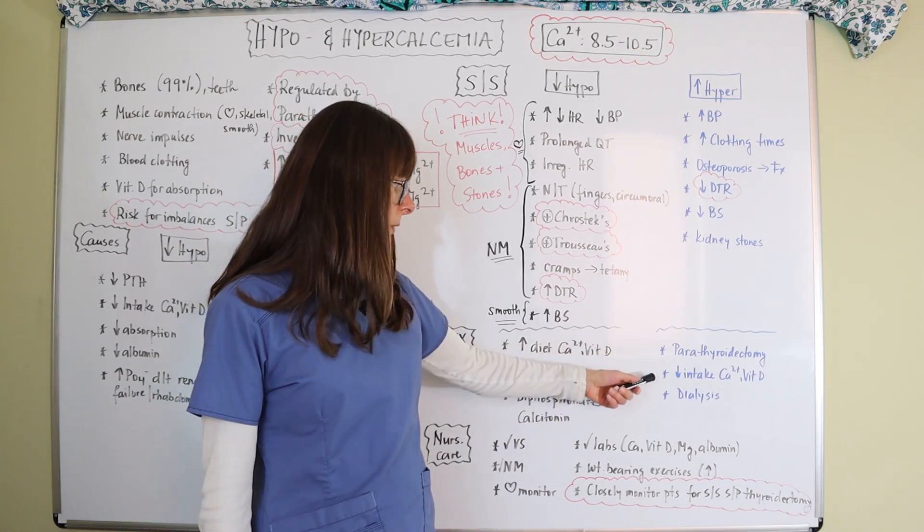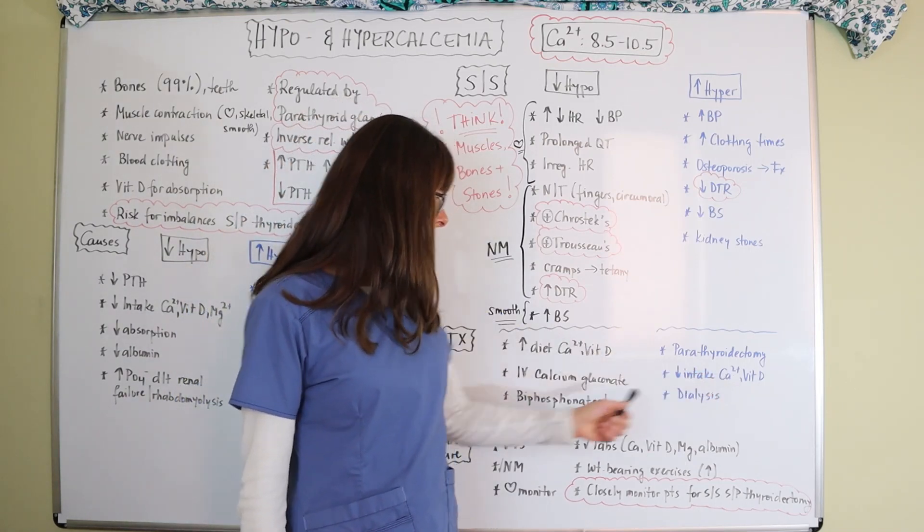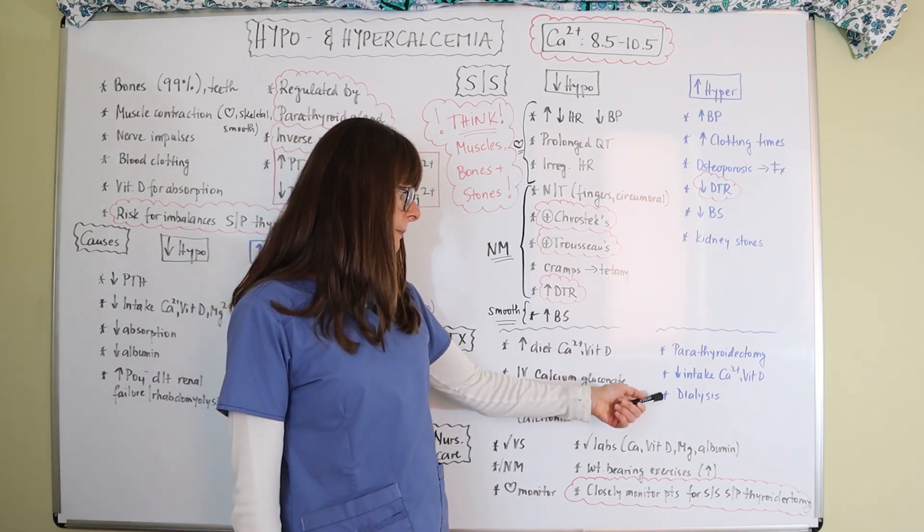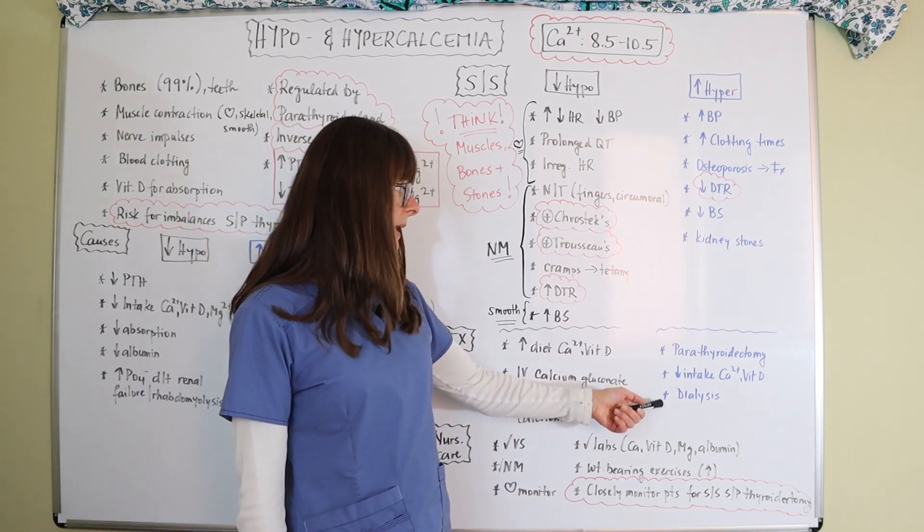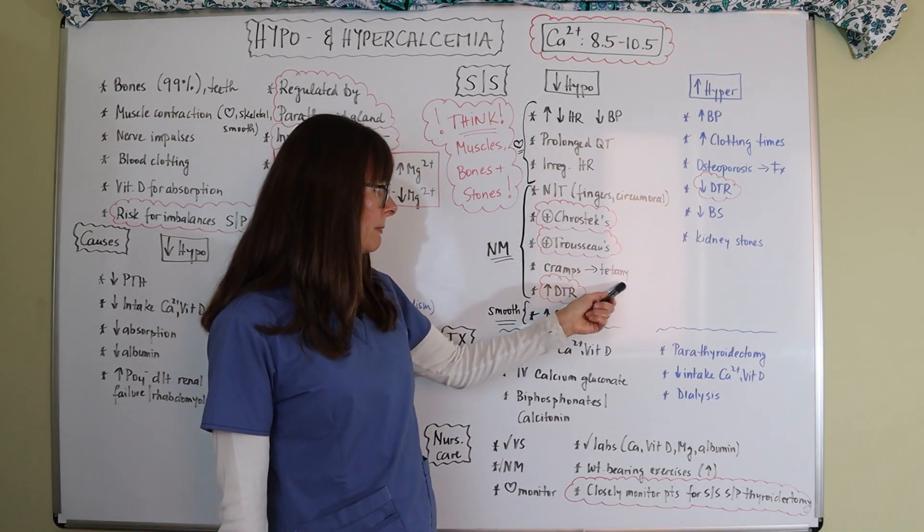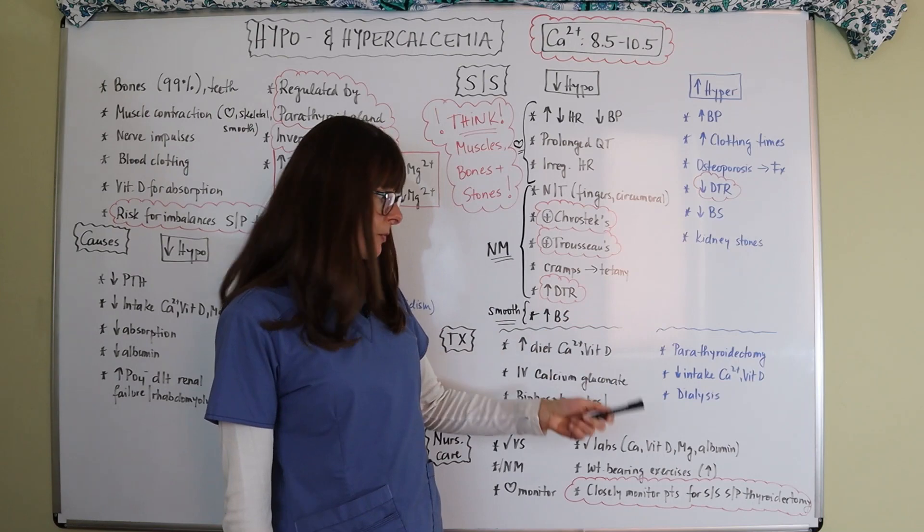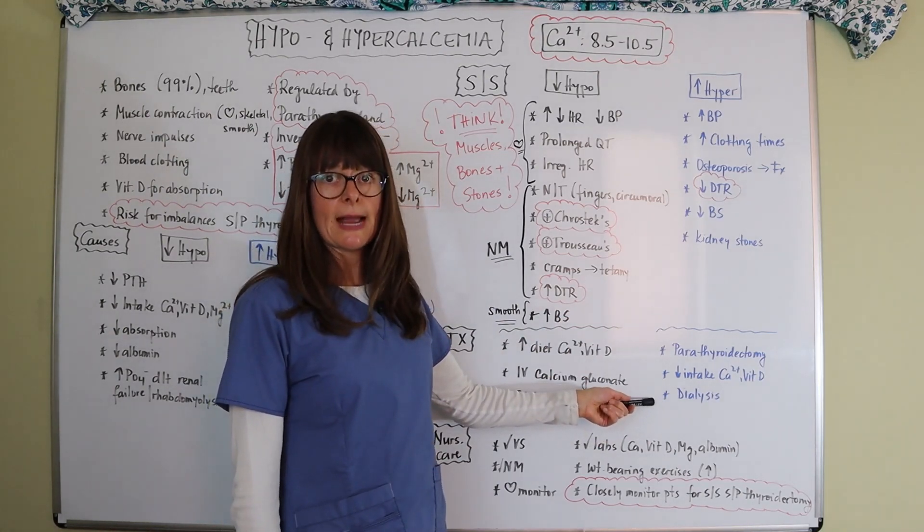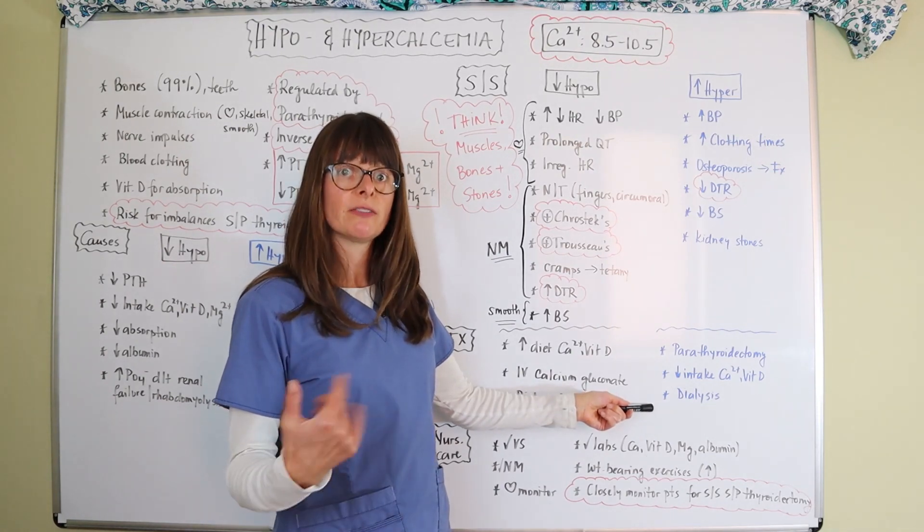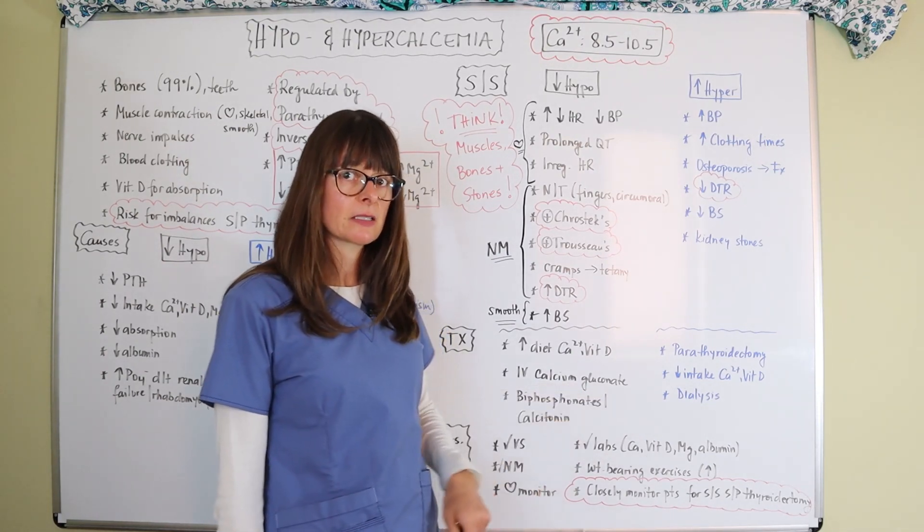We also want to recommend a decrease in intake of calcium and vitamin D, just like we recommend the increase over here. And if the hypercalcemia is really bad and the patient has bad symptoms, such as pertain to the heart or maybe muscle cramps, tetany, and decreased reflexes, we might have to put them on dialysis temporarily to filter out their blood and get rid of that calcium with the help of the dialysis machine.